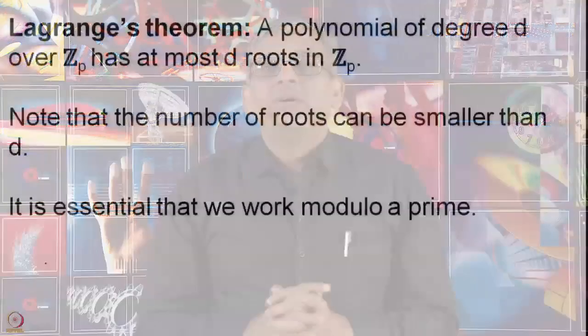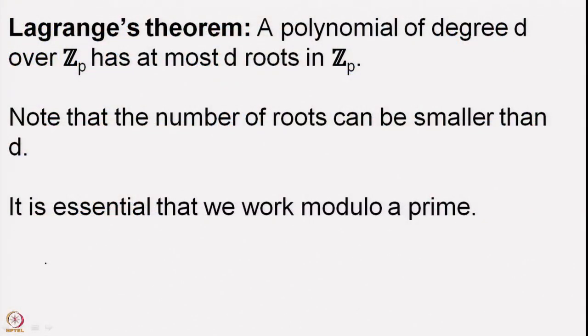Welcome back. We are looking at the theorem of Lagrange: if you take Z/pZ and take a polynomial of degree d with coefficients coming from Z/pZ, then there are at most d roots. This is a result we looked at towards the end of the last lecture. A polynomial of degree d over Z_p has at most d roots in Z_p. We also noted that the number of roots can be smaller than d, and it is essential that we work modulo a prime.